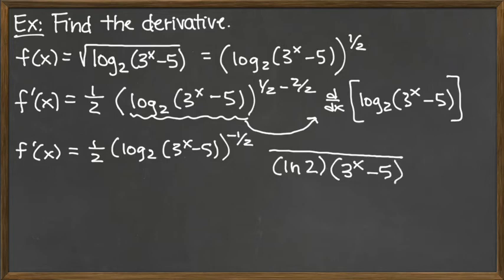So that's what lands in the base. And then typically on the top, we would just have 1. However, this is a chain rule problem. This argument of the logarithm was not just x, but rather an ugly function of x. And so we still have yet another chain rule that we have to multiply by the derivative of that argument. So d/dx of 3 to the x minus 5.